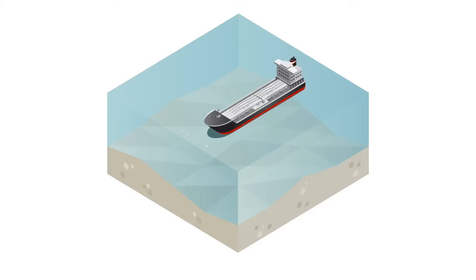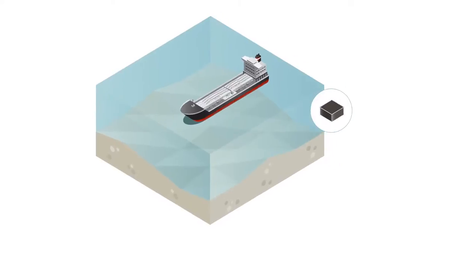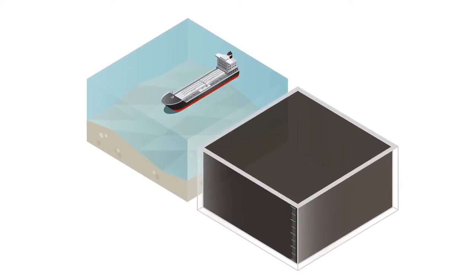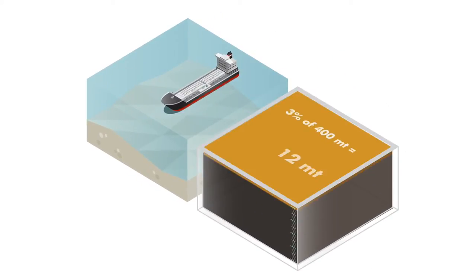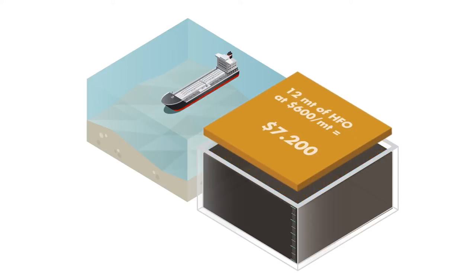If a ship has ordered 400 metric tonnes of bunker fuel with a cost of $600 per metric tonne, and is short delivered 3% or 12 tonnes, this means a loss of $7,200.